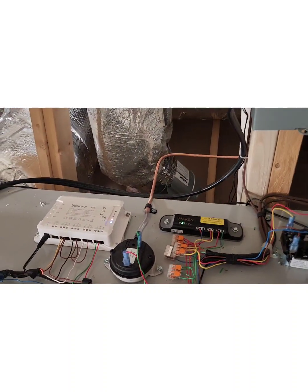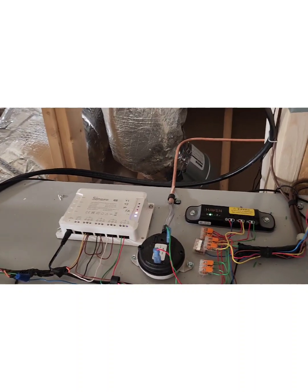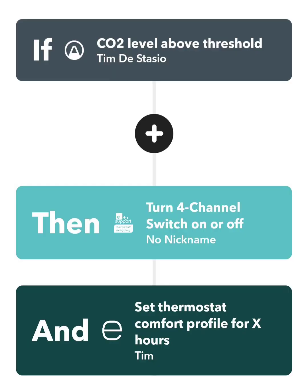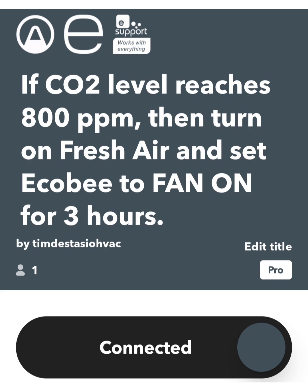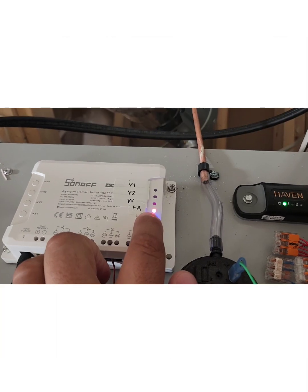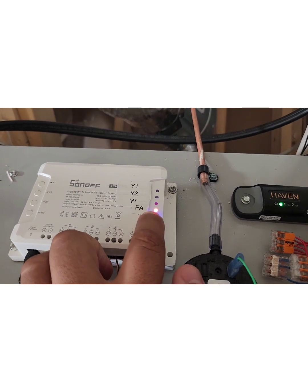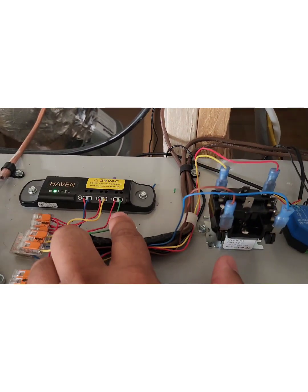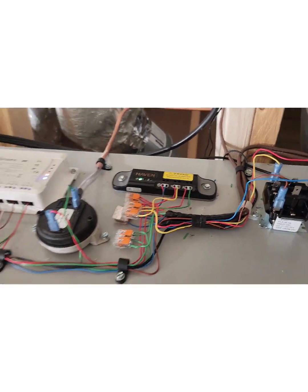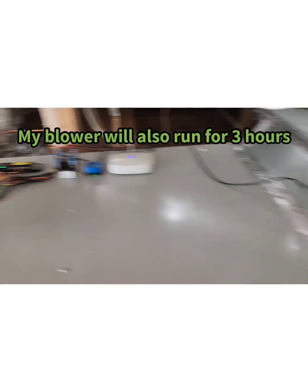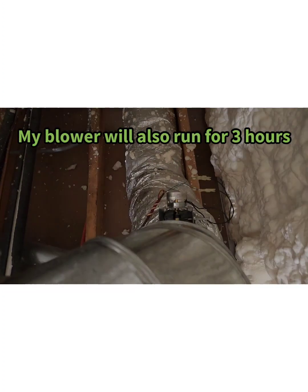The AirThings does sense CO2, but the problem is it doesn't have a controller like the Haven does. So through If This Then That I've set up an automation where if CO2 levels get high, it's going to click relay number 4 FA — which stands for fresh air — and that is wired in parallel with my contacts with the Haven to open up my outside air damper. So either one will open up this damper.